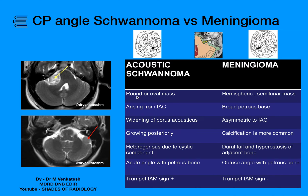Acoustic schwannoma is usually a round or oval mass and is hemispheric in shape. Acoustic schwannoma arises from the internal auditory canal — the lesion will have continuity with the internal auditory canal.